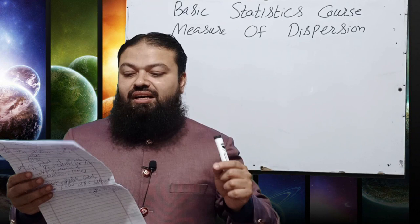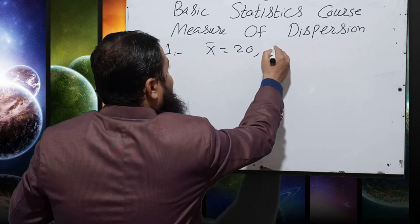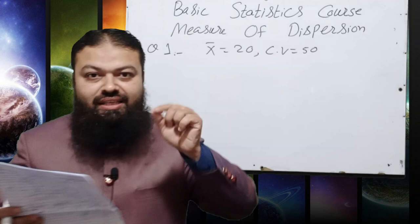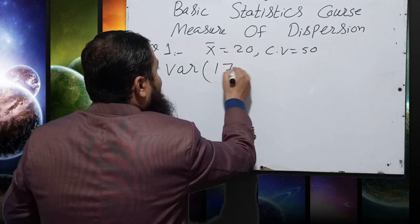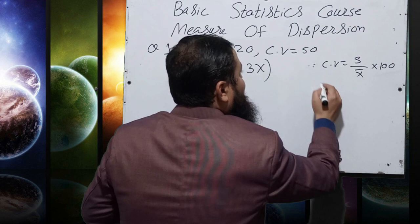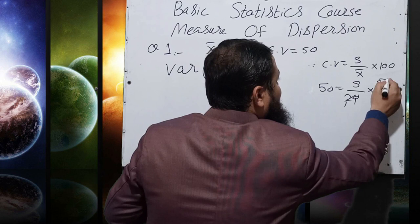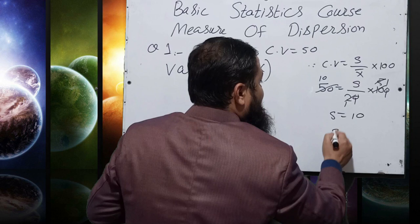Question number 1: If the arithmetic mean and coefficient of variation of X are 20 and 50 respectively, what is the variance of (17 − 3X)? X̄ = 20 and CV = 50. Using CV = (s / x̄) × 100, we get 50 = (s / 20) × 100, so s = 10, and variance = s² = 100.